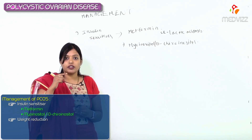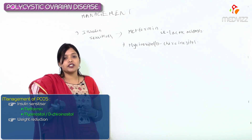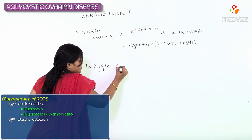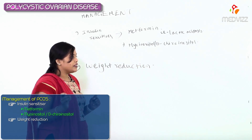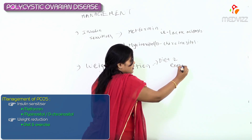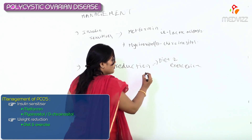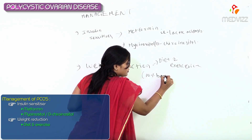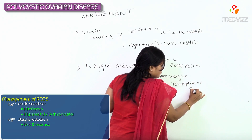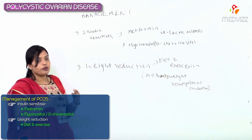The increased estrone in adipose tissue causes a positive LH cycle again and again, so we suggest all patients weight reduction first. We ask them to do this through diet and exercise — basically lifestyle modification. Studies have shown that even if they lose just 10% of their body weight, it will cause resumption of ovulation and cycles.